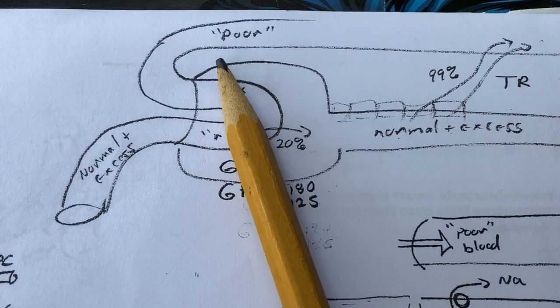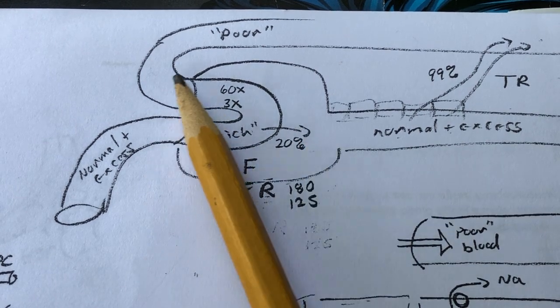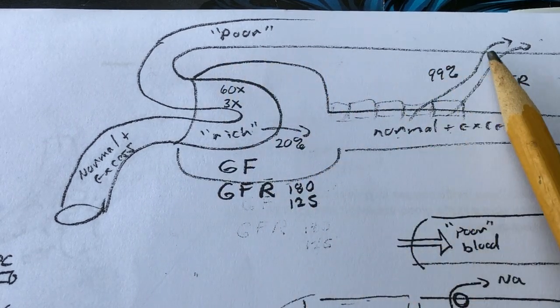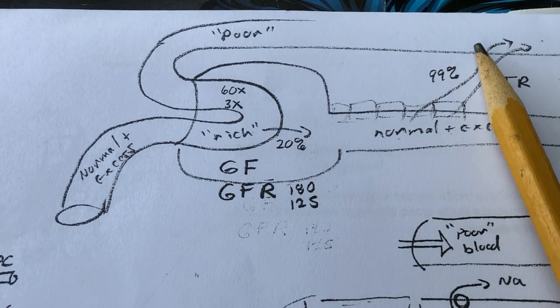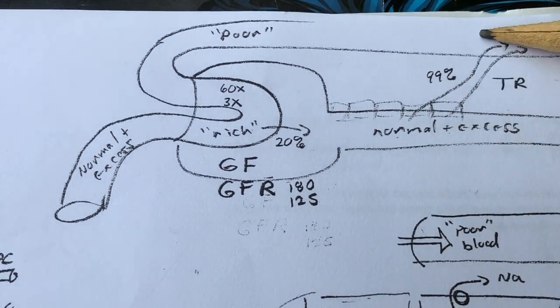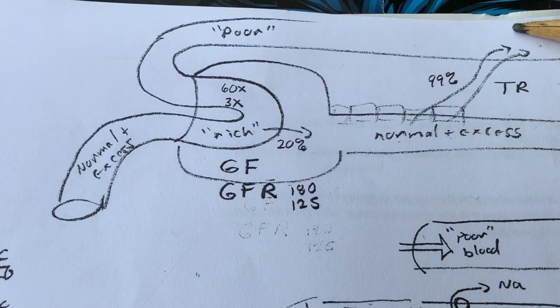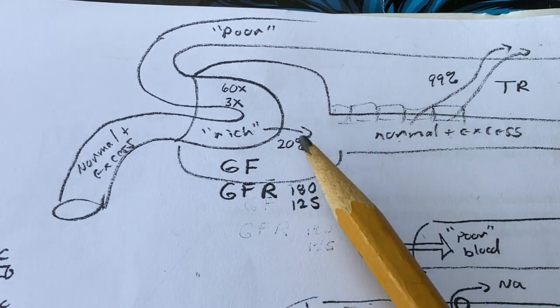This efferent arteriole turns around and becomes part of the peritubular capillaries, and in the peritubular capillaries this material will be returned. Well, 99% of the material will be returned back to the peritubular capillaries.